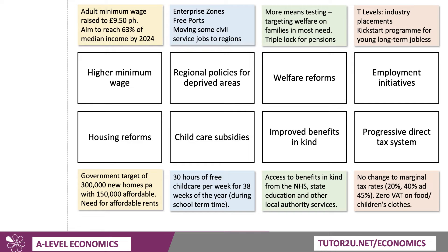Fundamentally, if you want to do something about relative poverty, you probably have to change the tax system. The truth is that in recent times there has been no change to marginal tax rates — 20%, 40% and 45%. The tax allowance is now £12,500, though that's now frozen. The government has maintained zero VAT on food and children's clothes, and may scrap VAT on energy bills. But there's been no fundamental change to the progressivity of the direct tax system — it's not being used as a main strategy for reducing poverty.